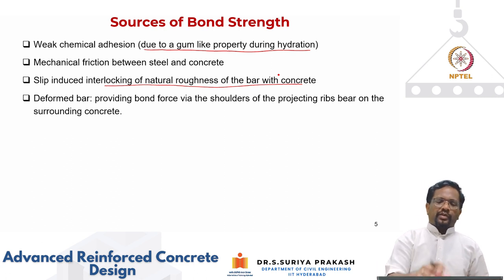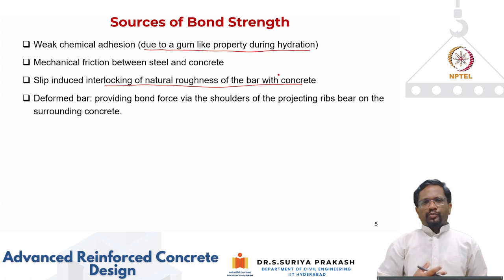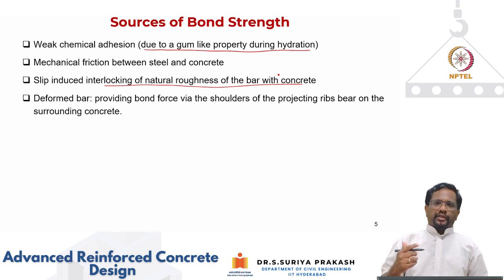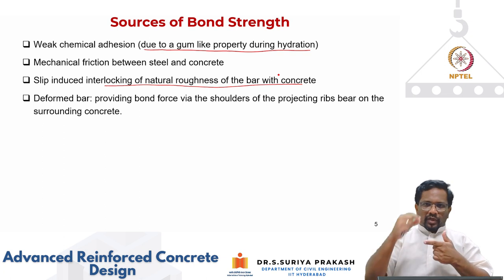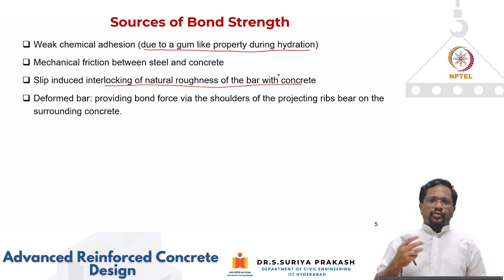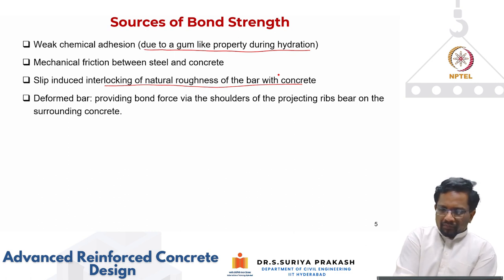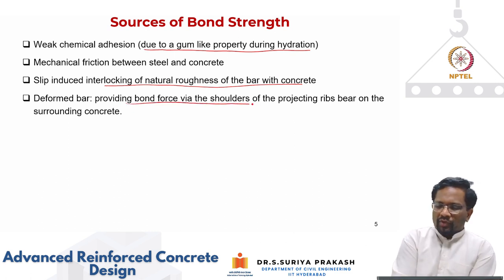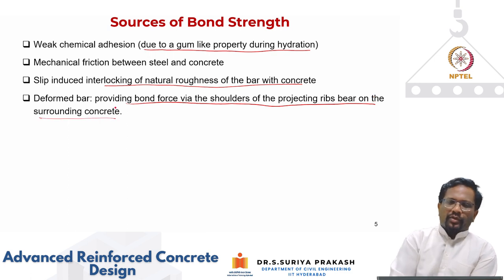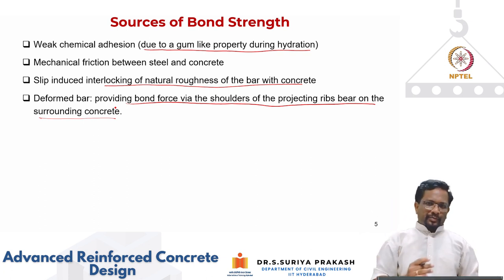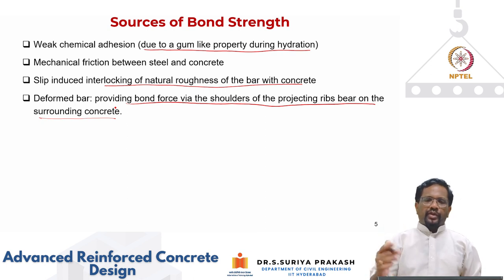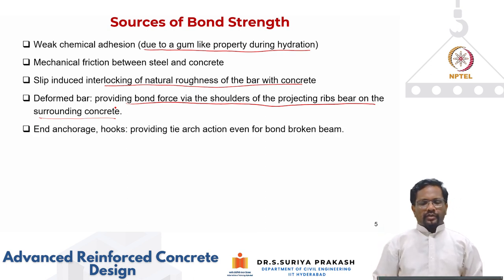These three mechanisms — adhesion, friction, and interlocking — happen for a smooth bar too. But nowadays we always use deformed bars, which have ribs or protrusions on the surface that help improve bond strength. Deformed bars provide bond force via the shoulders of projecting ribs which bear on the surrounding concrete. The ribs are discretely spaced and project, putting bearing stresses on the surrounding concrete. In addition, we can provide end anchorages: L-bent, U-bent, hooks, or transfer force by arch action.